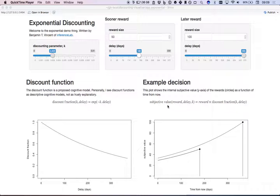The subjective value at any delay from now for a given reward size, and this is my discounting parameter, is given by the discount fraction that we've seen over here on the left, but multiplied by the reward.